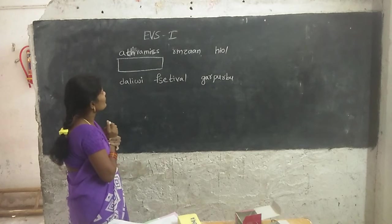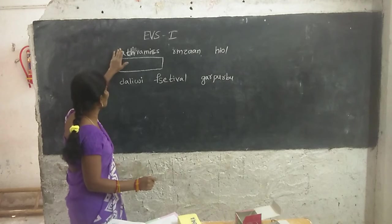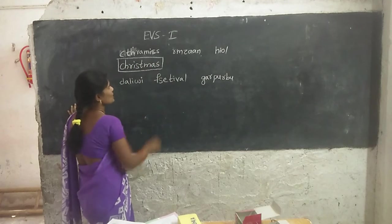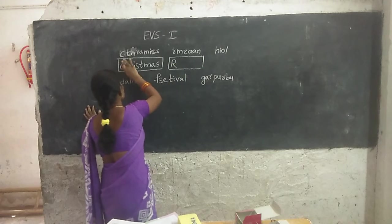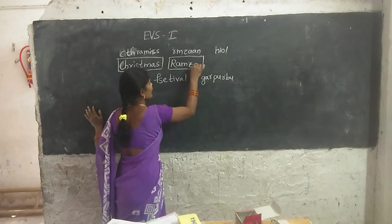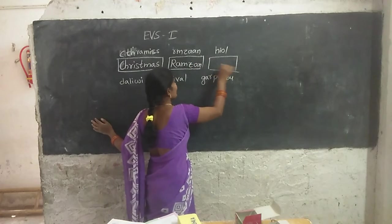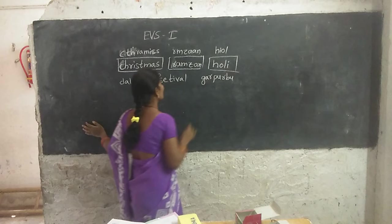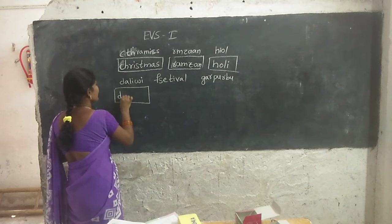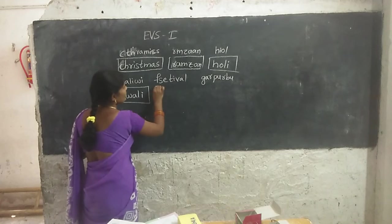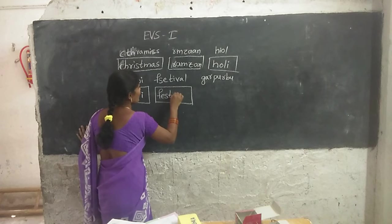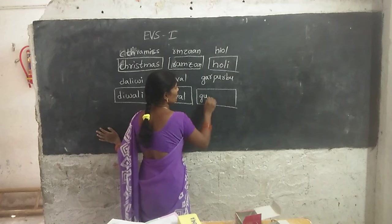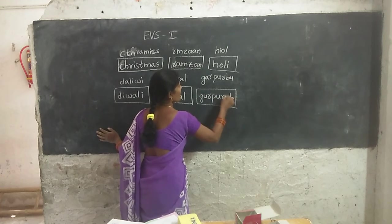F-E-S-T-I-V-A-L — this is Festival. G-U-R-P-U-R-B — this is Gurparav. Write down small letters only.